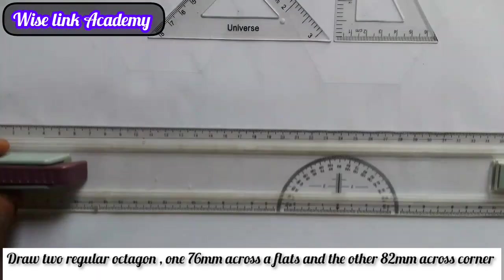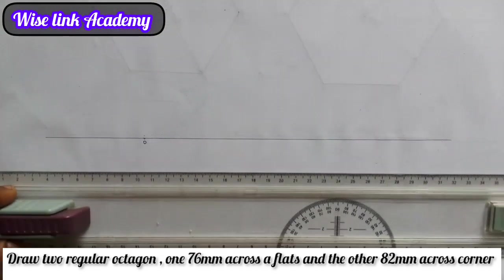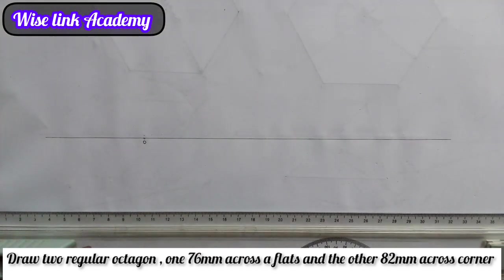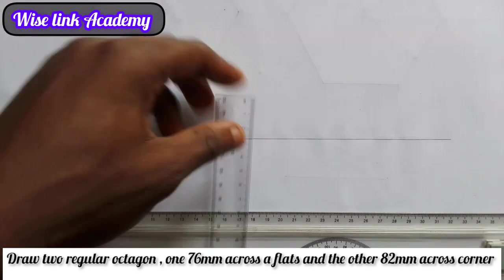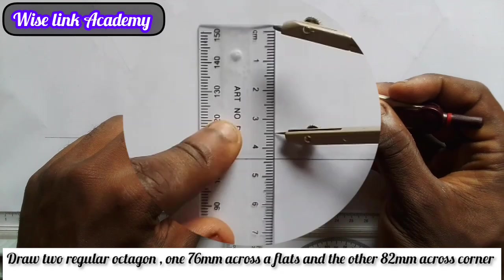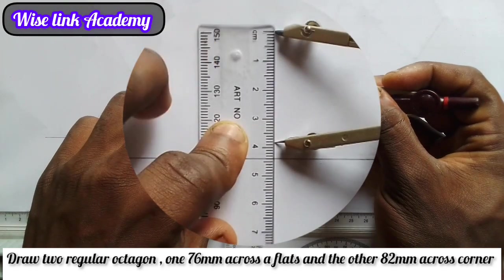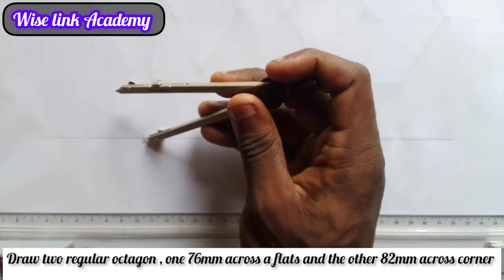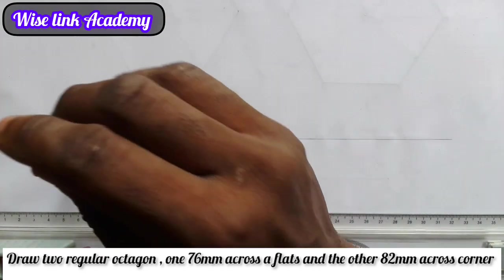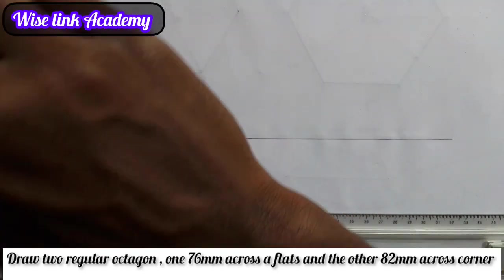Now for my first one, I'm given the dimension of 76mm. So half of 76, 76 divided by 2, I have 38mm. So I'll measure 38 on my meter rule: 5, 35, 36, 37, 38. I'll put it at this point O and draw a circle this way.